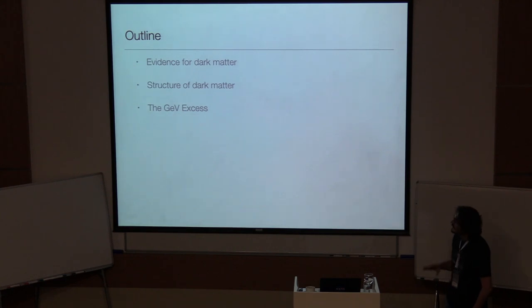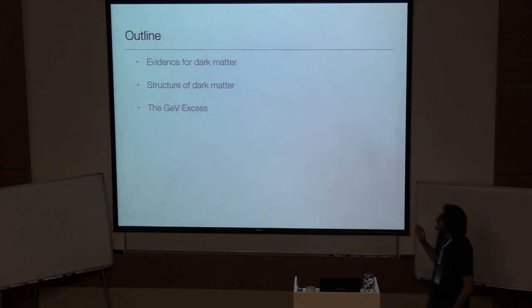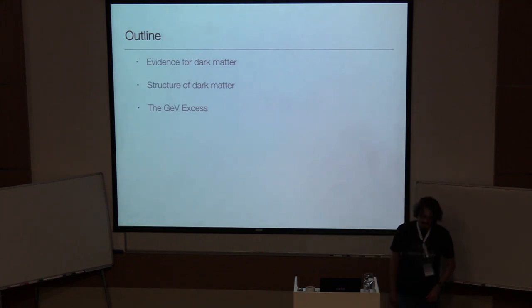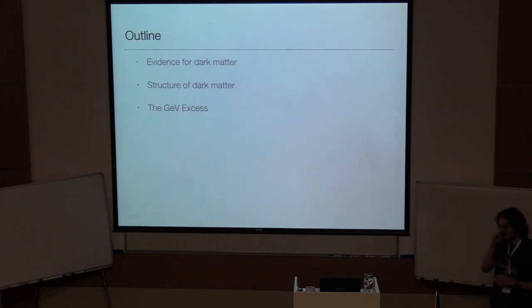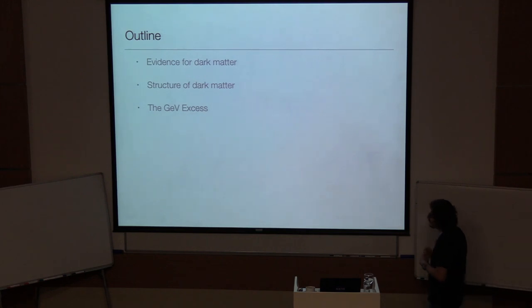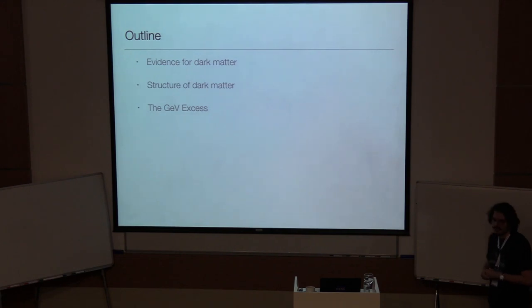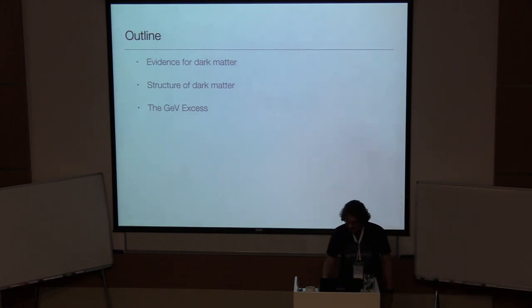Coming to today's lecture on dark matter and structure, there will be three components. First, I'll talk about evidence for dark matter — basically why we think something called dark matter exists. Second, I'll talk about its structure, meaning the spatial distribution. Third, I'll talk about the so-called GeV excess. Some of you may have heard of it; many who don't think about dark matter daily haven't — and that's fine. It's one of the problems I worked on during my PhD.